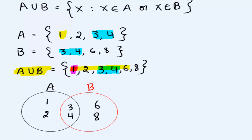The union, again look back up here. Union is a set of all x such that x is an element of A or x is an element of B.